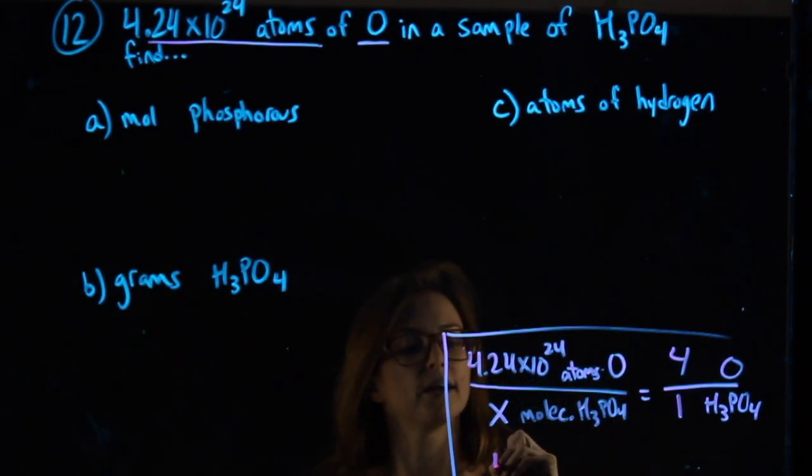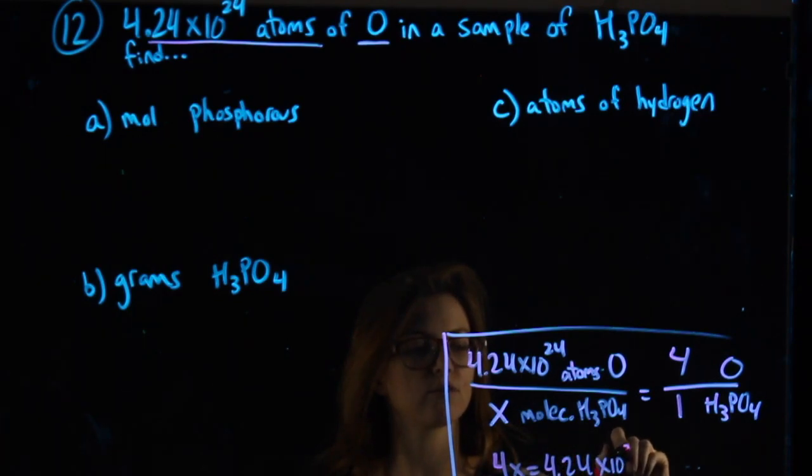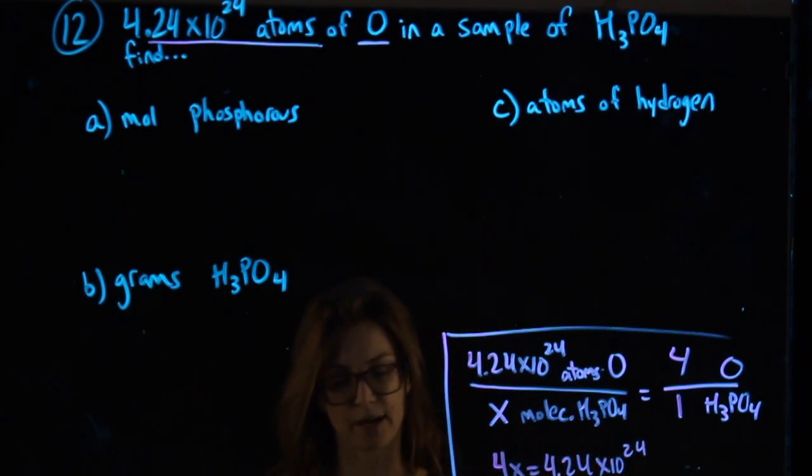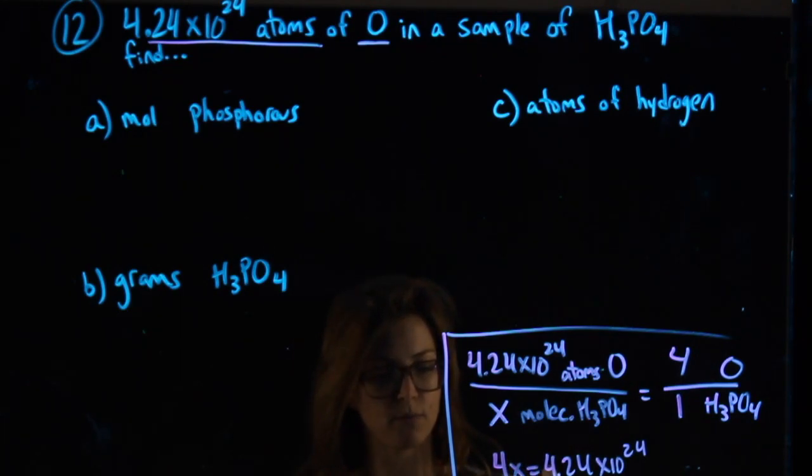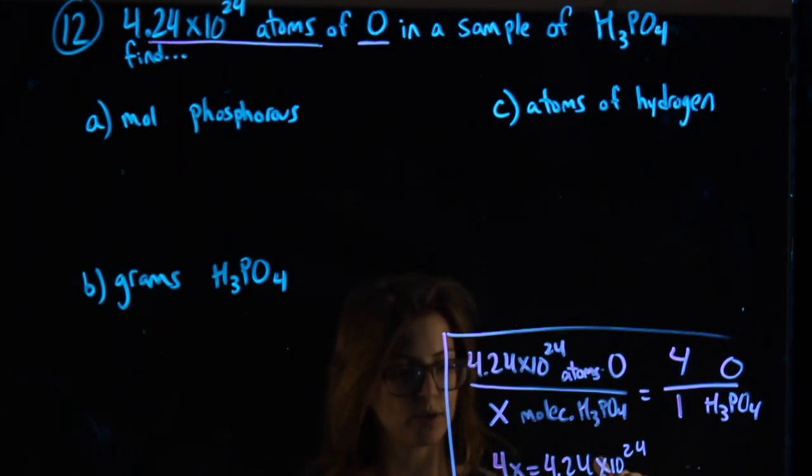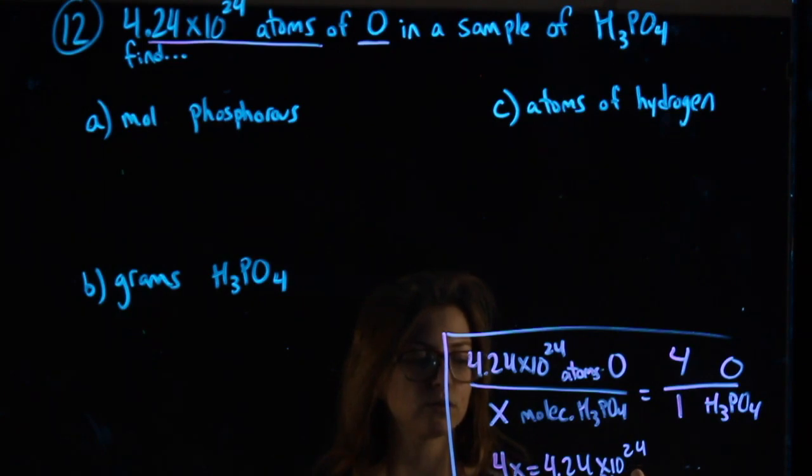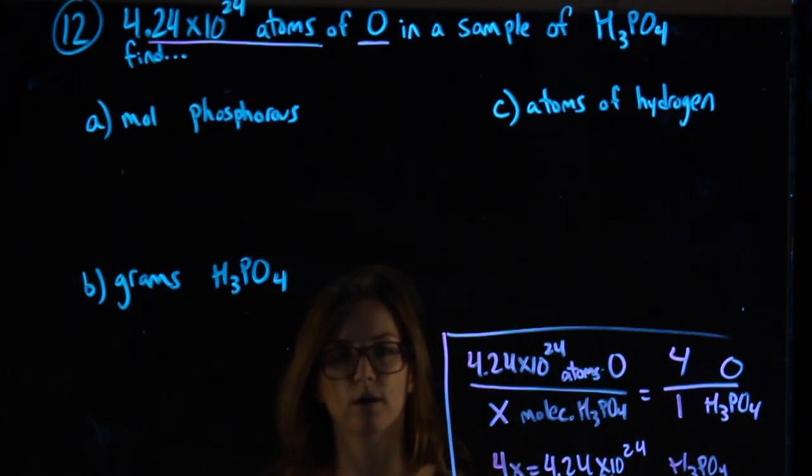Cross-multiplying, we get that 4x equals 4.24×10²⁴. Dividing by 4, my x is 1.06×10²⁴. And that's molecules of H3PO4.